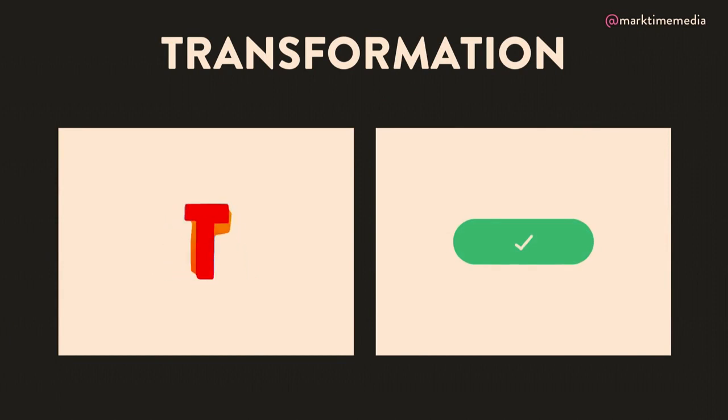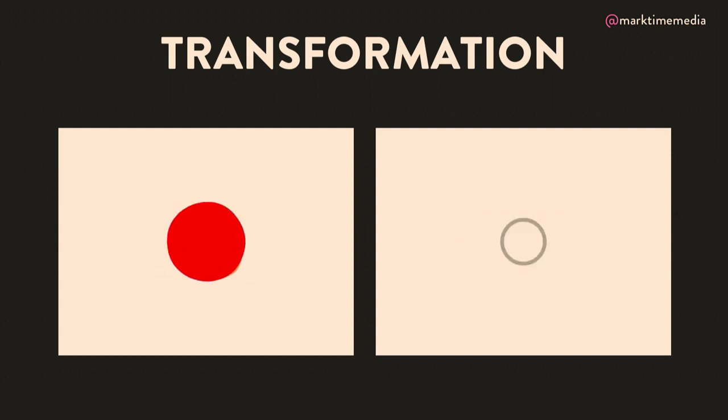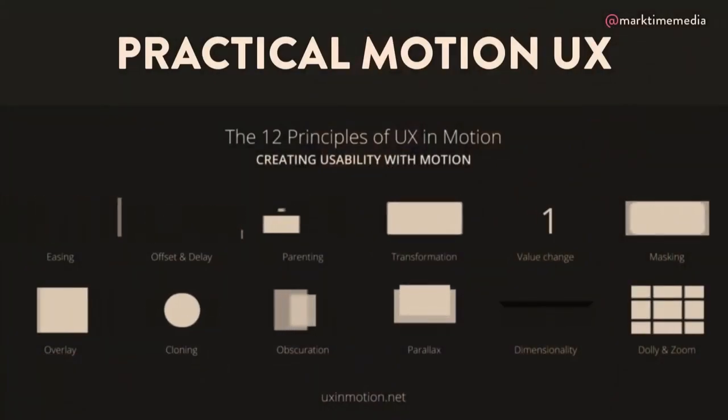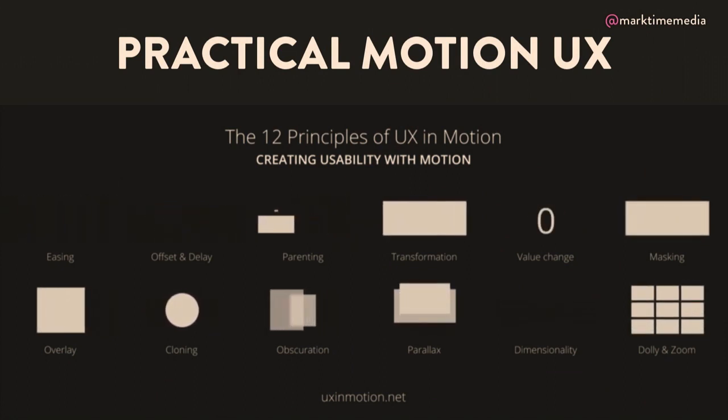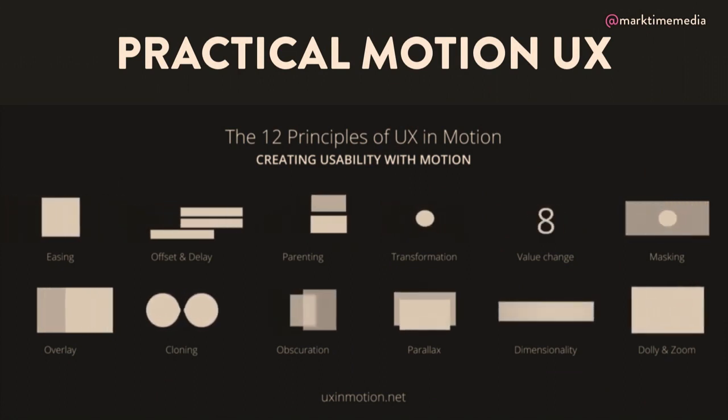I used to play with that morph stuff in Flash all the time back when I first got started. The example on the right shows a really nice use of transformation — a button turns into the loader which turns into the confirmation. I also want to briefly show you this: UX in Motion developed some specific motion patterns that can be used in web design. I would highly recommend you go check out UXinMotion.net — they're built somewhat upon the principles of animation and have to do specifically with user experience and motion.